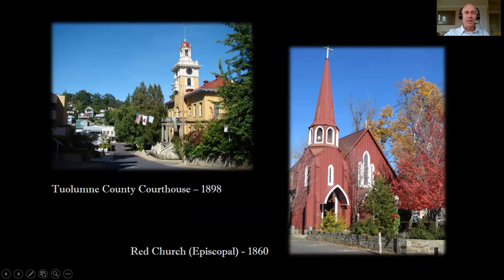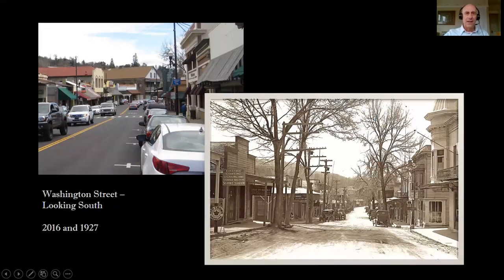A couple of landmarks in town: the Tuolumne County Courthouse from 1898 — there was a previous wooden courthouse that they took down to enlarge in 1898 — and the Red Church, which is at the top of Washington Street. The street kind of splits around this 1860 Carpenter Gothic Episcopal Church, which is quite a landmark in town. Here's a view looking down Washington Street toward the City Hotel, a very old brick building, plus a similar view taken in 1927 showing covered sidewalks.